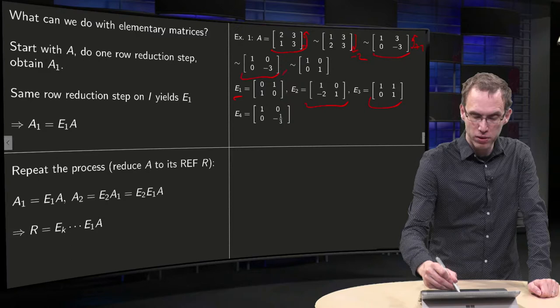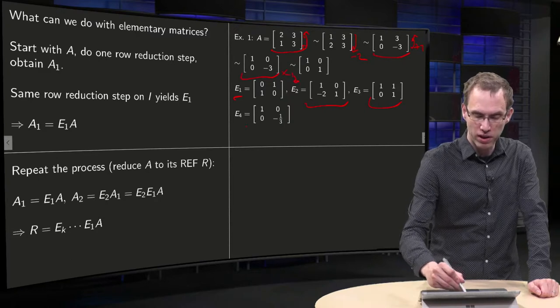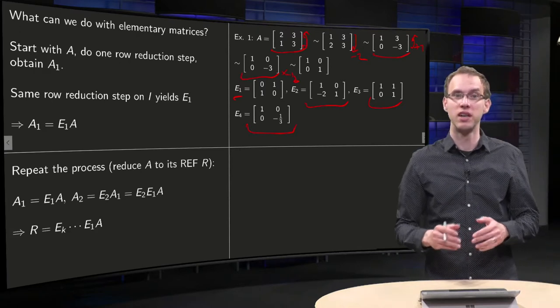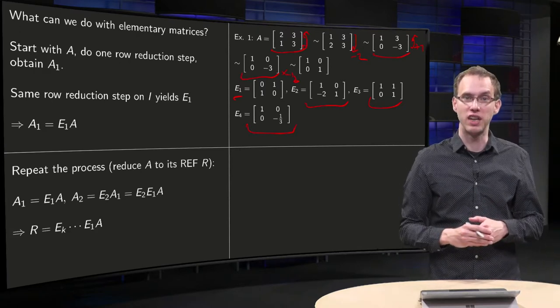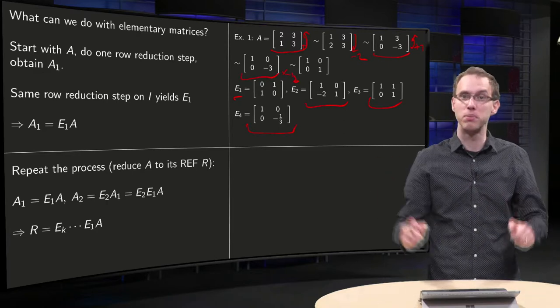And finally multiply with minus one third. Do the same on that identity matrix to obtain your fourth elementary matrix. And then we have row-reduced our matrix A, and we also have kept track of what elementary matrices are needed.